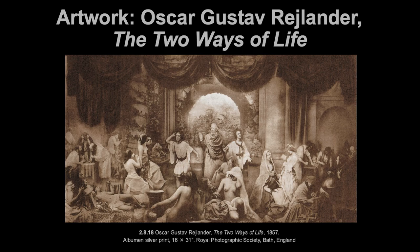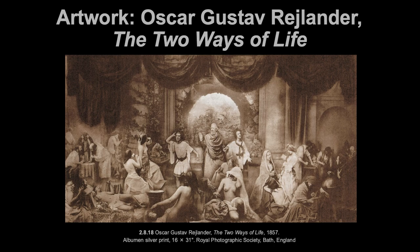Right from the beginning of photography — here we are at 1857 — we're thinking of making a painting or a dramatic scene like a play. This is a montage, meaning a bunch of images at once — French word. The French words really travel throughout art history. So there's a bunch of different photos in this image. This is one piece of photo paper, pretty big — 16 inches tall by 31 inches across. That's the size of a poster.